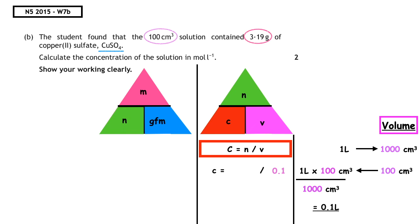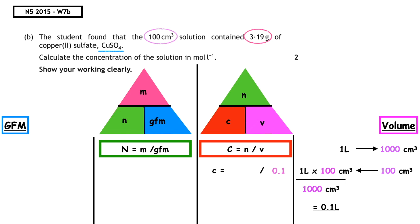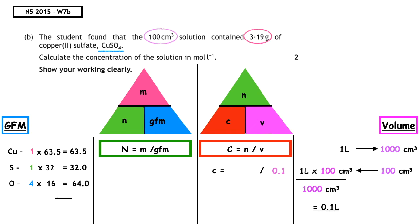We calculate the number of moles using the other triangle: n = mass ÷ GFM. The mass given is 3.19 grams. Using the formula CuSO₄ to calculate the gram formula mass: copper — one times 63.5 equals 63.5; sulfur — one times 32 equals 32; oxygen — four times 16 equals 64. Adding those up gives a GFM of 159.5 grams.